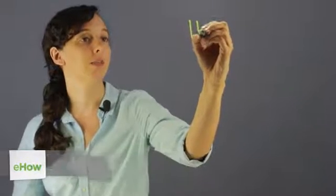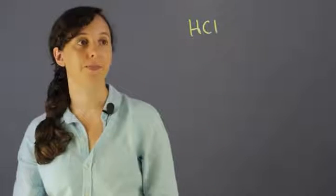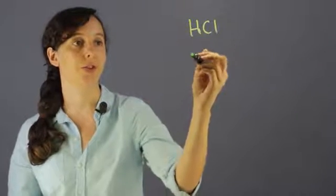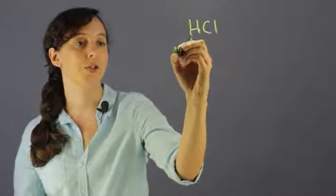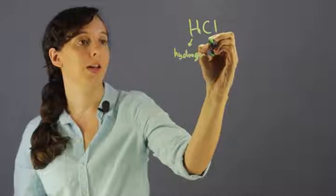Okay, so HCl is a chemical formula, and if you look on the periodic table, you'll see that it divides into two different elements: hydrogen and chlorine.